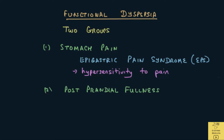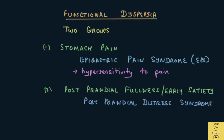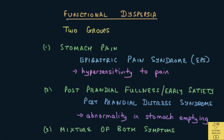The second group is those in whom the main symptom is fullness after meals or an inability to finish a meal. This group is called post-prandial distress syndrome. Prandial means a meal, so post-prandial means after a meal. The main mechanism here is an abnormality in emptying of stomach contents. Some patients have a mixture of both pain and fullness and early satiety.